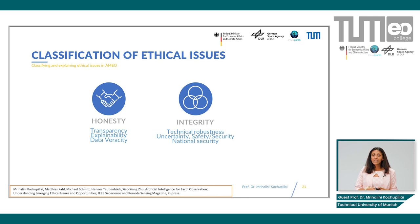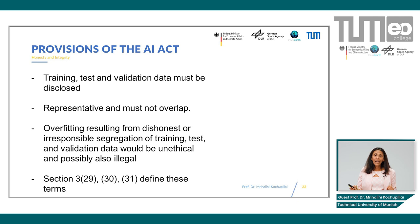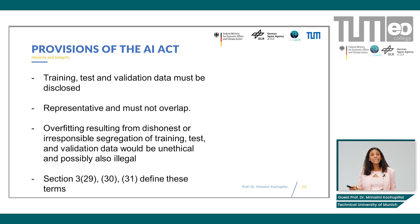If you overlap these data sets, you will face the issue of what is called overfitting. This means that your AI model or AI system is not going to perform at the level you claim it will perform. Under the AI Act, all people developing high-risk AI systems need to present both the test and training data sets. It is likely, once the standards come forward, that deliberately making the test and training data sets overlap can become not just unethical but illegal. So go back and take a look at your data sets — are they truly not overlapping?